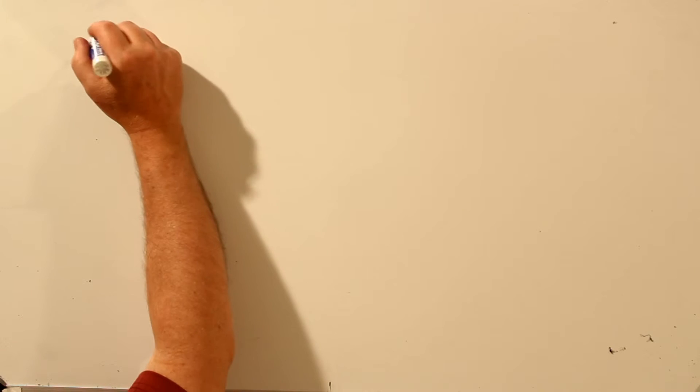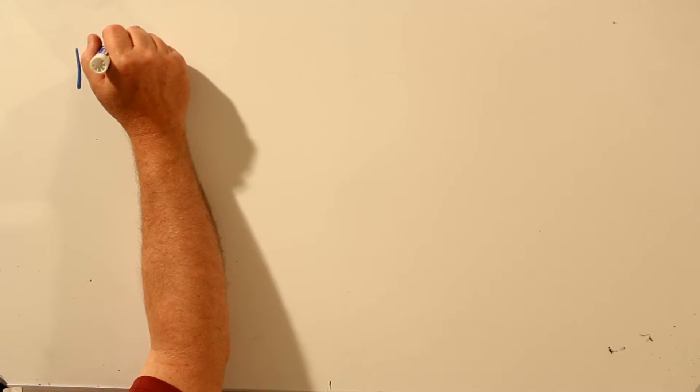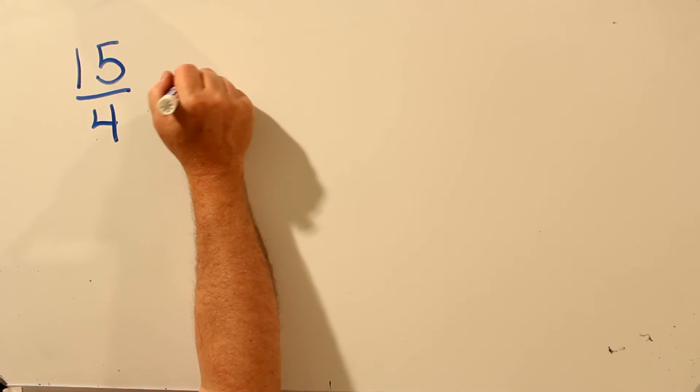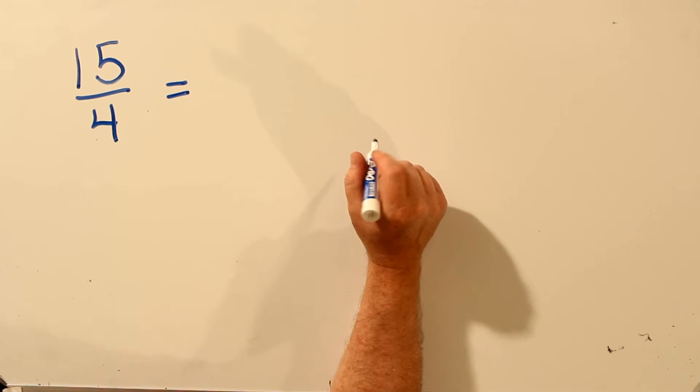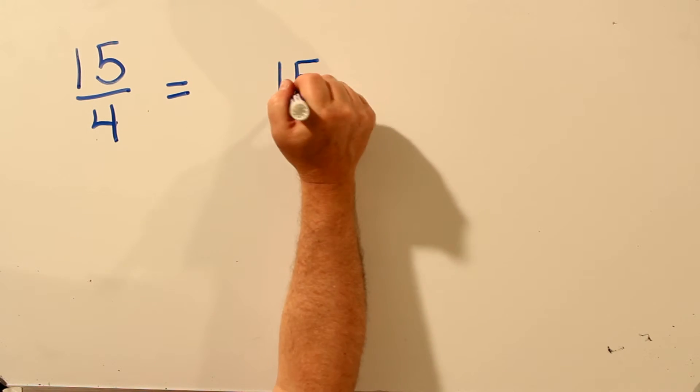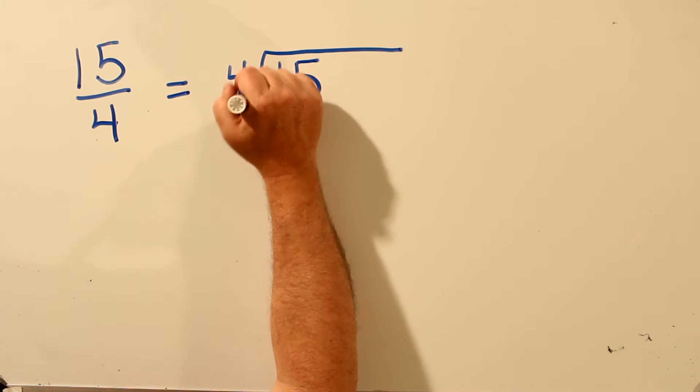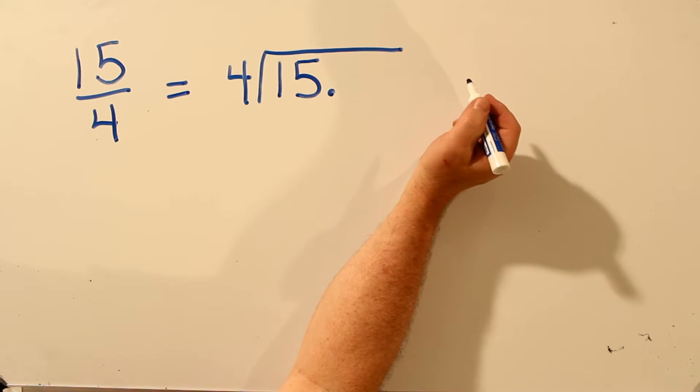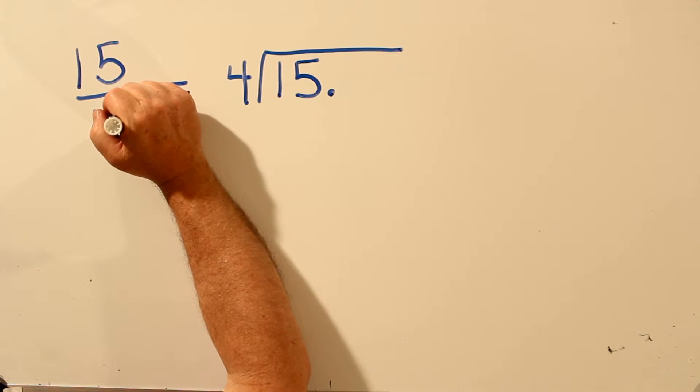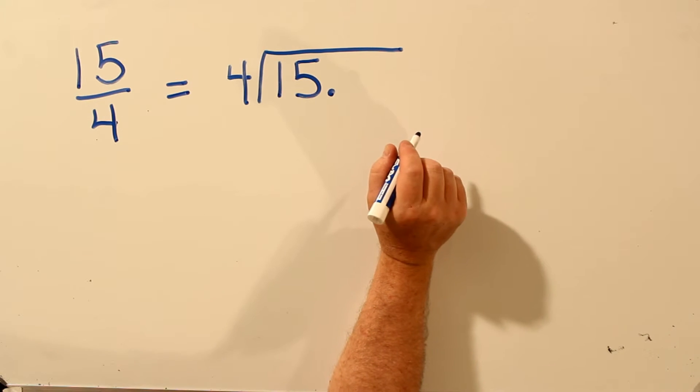Let's try converting an improper fraction to a decimal. What's 15 fourths, written as a decimal? Well, 15 over 4 is 15 divided by 4. Now here, 4 does go into 15, because 15 over 4 is an improper fraction. The answer is going to be greater than 1.